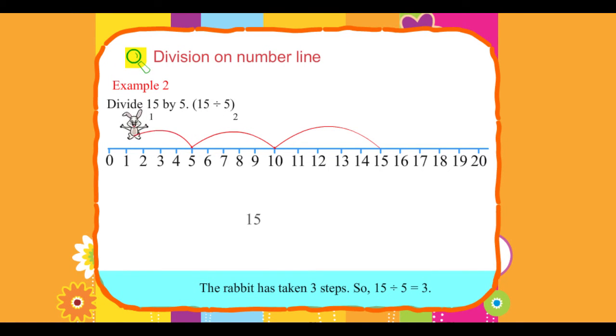The rabbit has taken 3 steps. So, 15 divided by 5 equals 3.